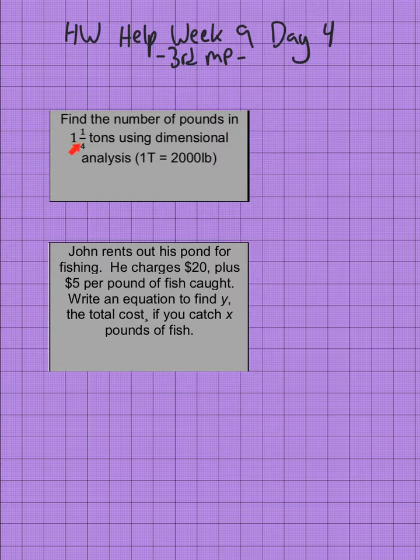I'm going to start by changing 1 and 1/4 to an improper fraction. 1 times 4 is 4, plus 1 is 5. So 1 and 1/4 tons equals 5/4 tons.